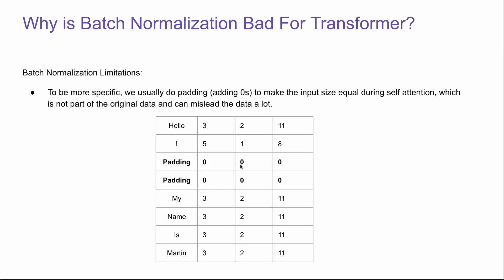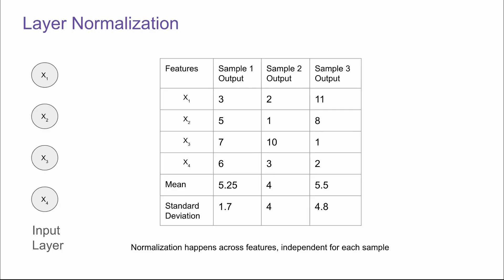Here is an example. Let's say we have two inputs: the first one is 'Hello!' and the second is 'My name is Martin.' In order to go through the self-attention matrix, because the dimension is fixed, we actually have to add two padding tokens for the first input. The padding will be all zeros. When we do batch normalization using this, it's going to confuse the model a lot because we have to include these unnecessary zero values. So the solution is to do layer normalization.